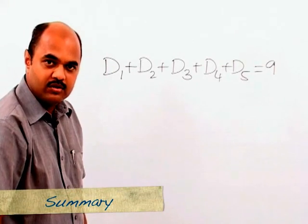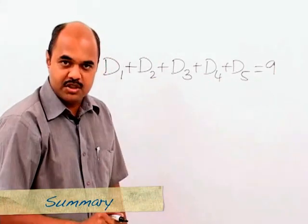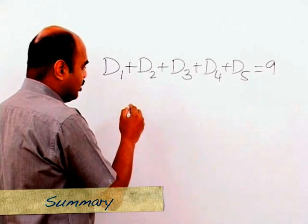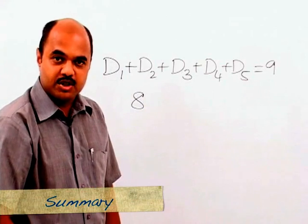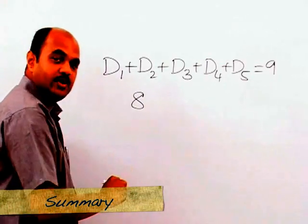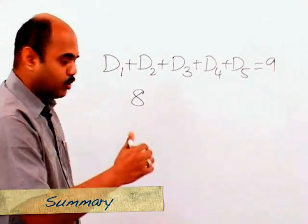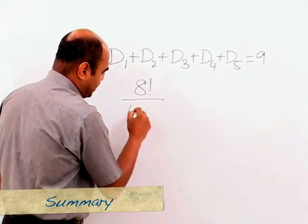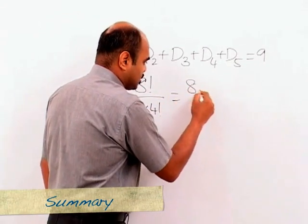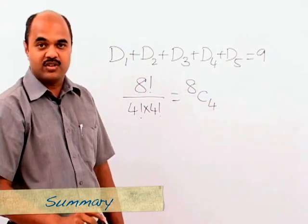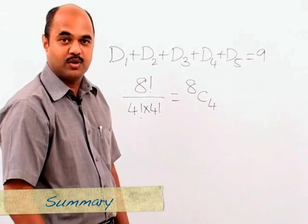We still need four more, and because there are five different values, we need four partitions as learned earlier. So we have eight objects in all — the four remaining values and the four partitions — out of which four are of one type (identical values) and four of another type (partitions). This gives us 8! / (4! × 4!), which is simply 8C4. There are 8C4 ways of getting a total of nine on five dice.